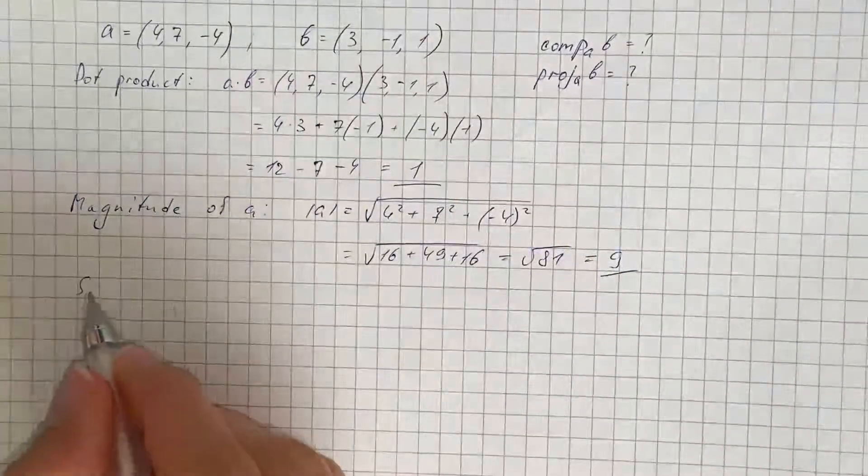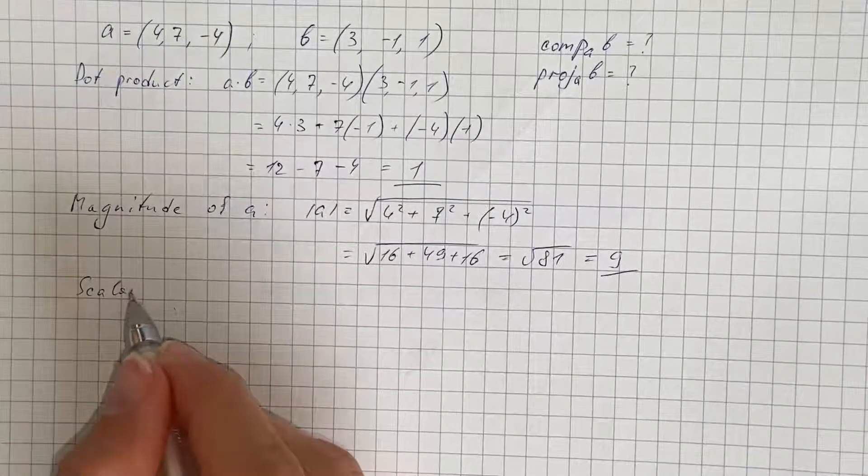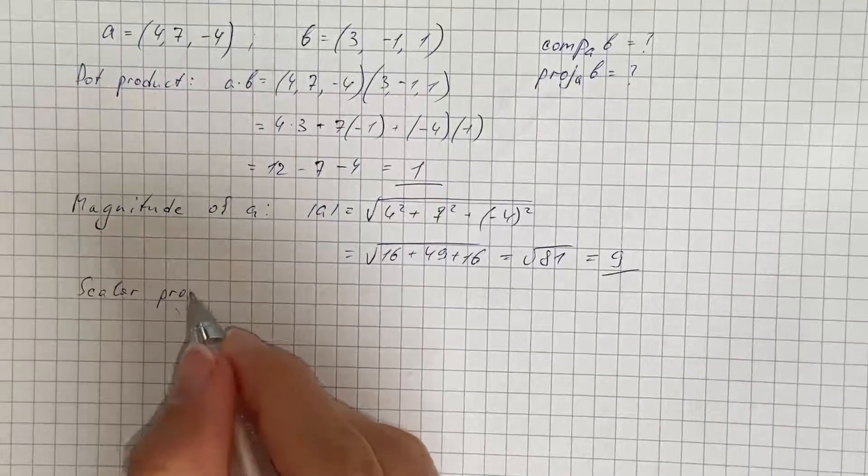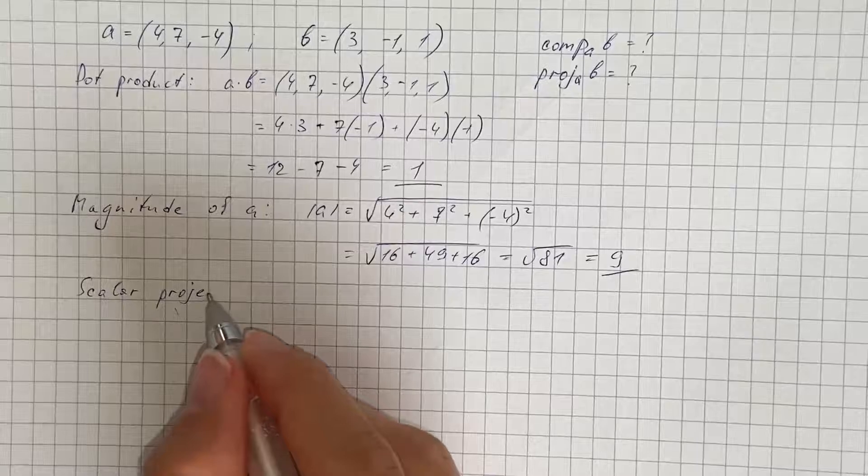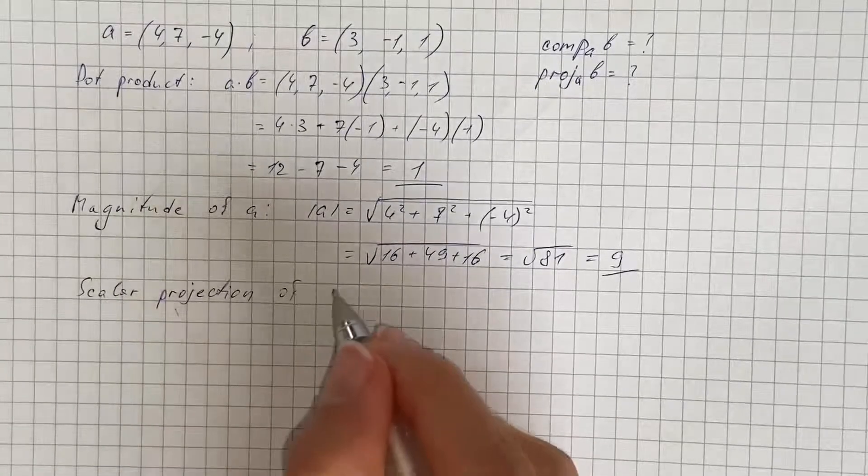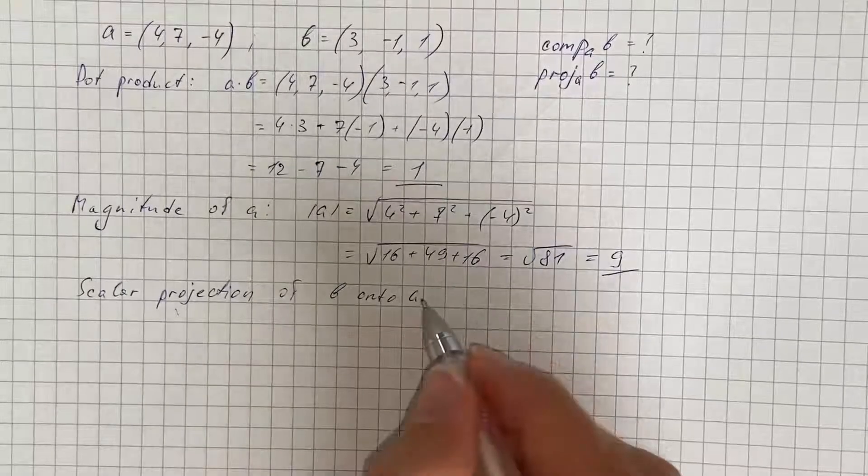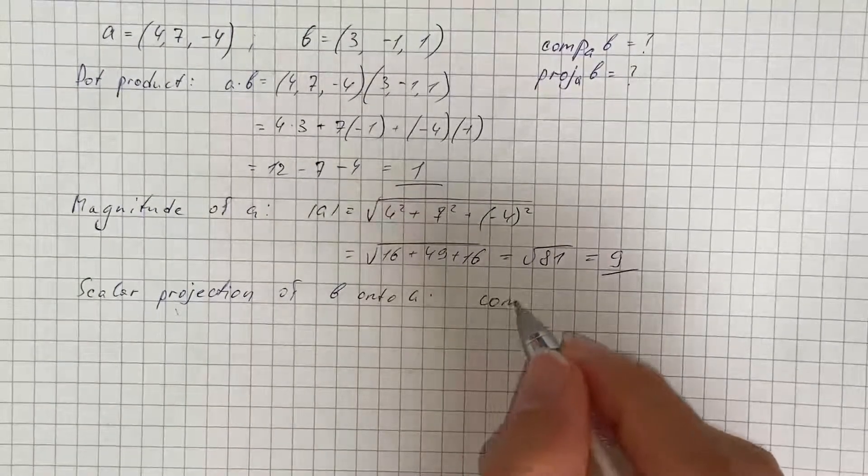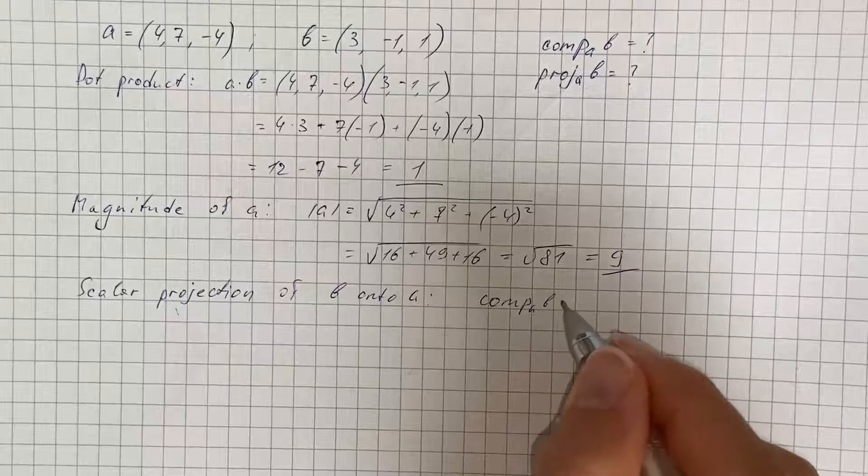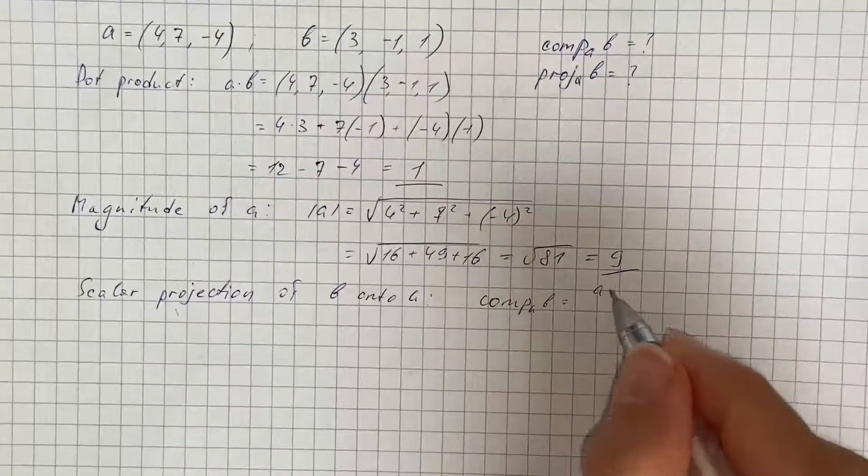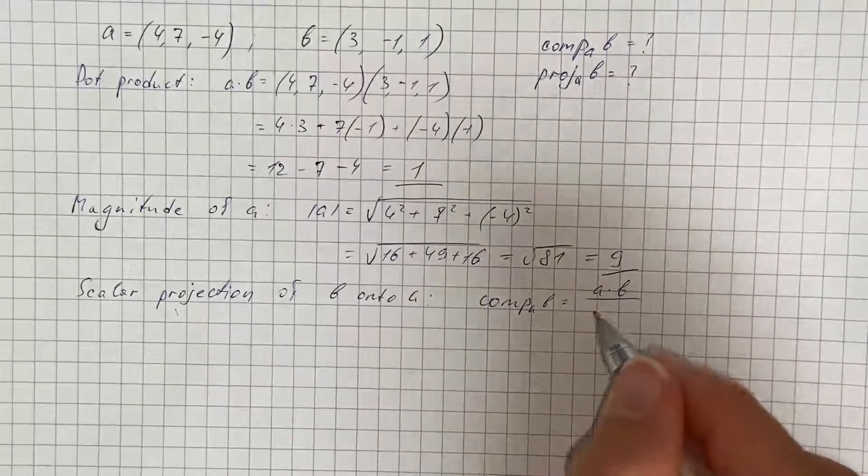So scalar projection of b onto a is given by dot product over magnitude of a.